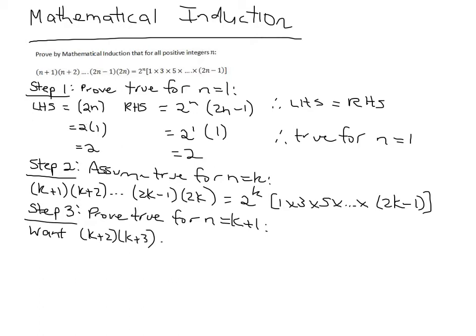and then it's 2 into k plus 1 minus 1. So if I expand that out, it's 2k plus 2 minus 1. So that's 2k plus 1.